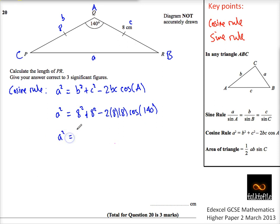So I'm going to just put that whole thing into my calculator. So I'm going to do 8 squared plus 8 squared minus 2 times 8 times 8 times cosine 140, and I get 226.0536887 and it carries on.